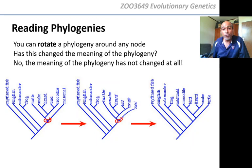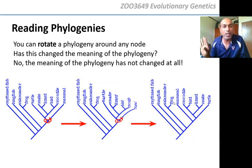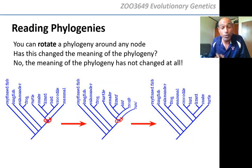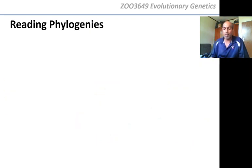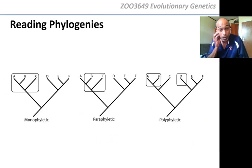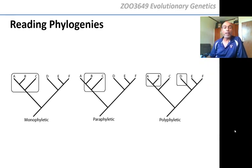That is why, even though before rotation turtle was close to frog and now mammal is close to frog, it's irrelevant — it doesn't mean a thing. You can rotate a phylogeny and it doesn't mean a thing. Now, what about these fancy terms: monophyly, paraphyly, and polyphyly? You've learned this for many years now, and I'm not going to dwell on it, because you should know this already.